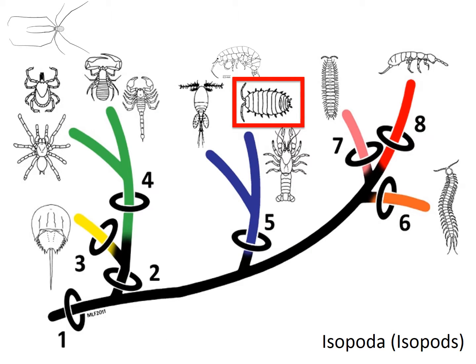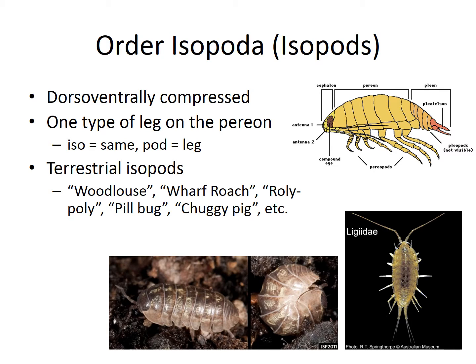This is in contrast to the isopods, or Isopoda, which are dorsoventrally compressed — flattened from top to bottom, as you can see in the images. Isopods only have one type of leg on the pereon — iso meaning the same, and pod meaning leg. There are some terrestrial isopods, though many more marine isopods exist. There are really giant ones that live at the bottom of the ocean feeding off bacteria at hydrothermal vents, around eight inches long. Terrestrial ones are sometimes referred to as wood lice, or wharf roaches in the family Ligiidae — sometimes people call them roly polies, pill bugs, or chuggy pigs.